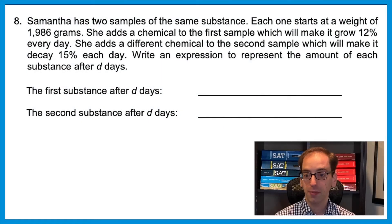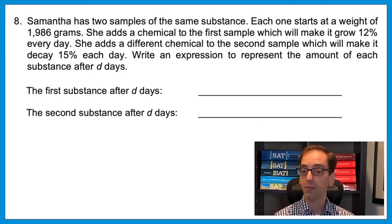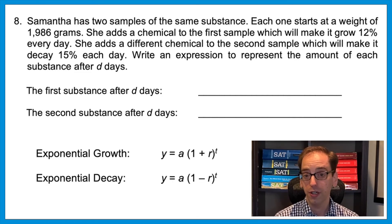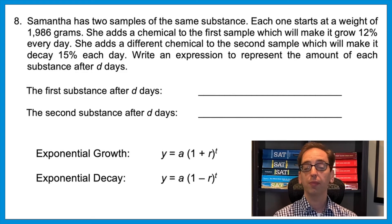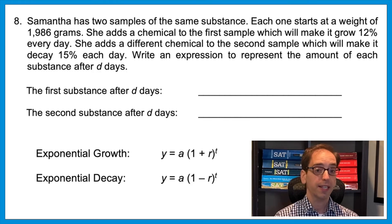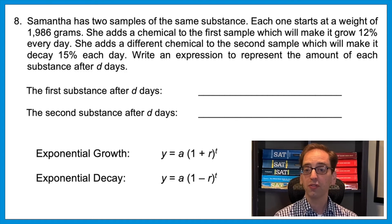Let's look at one more non-linear situation. Samantha has two samples of the same substance, each starting at 1,986 grams. She adds a chemical to the first sample which makes it grow 12% every day, and a different chemical to the second sample which makes it decay 15% each day. Write an expression to represent the amount of each substance after d days. Since it's adding or subtracting the same percent, it's exponential. The formula for exponential growth is y equals a times (1 plus r) to the t, and decay uses (1 minus r).